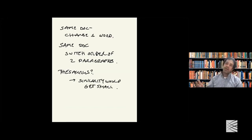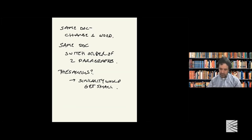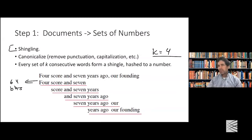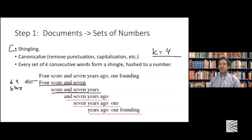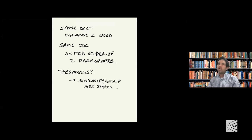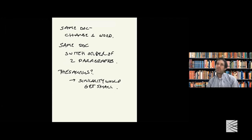Seth is asking: do the shingles themselves overlap? Yes — we take words one through four, words two through five, and so on. Why do we use overlapping shingles rather than dividing into non-overlapping blocks of four words? The problem is that if I'm doing every block of four words and then add a single word at the top of a document, everything gets shifted — none of the four-word collections will match, even though the documents are nearly identical.